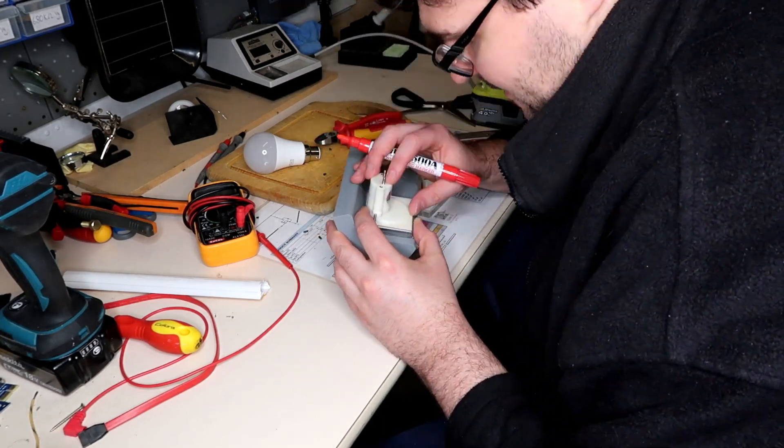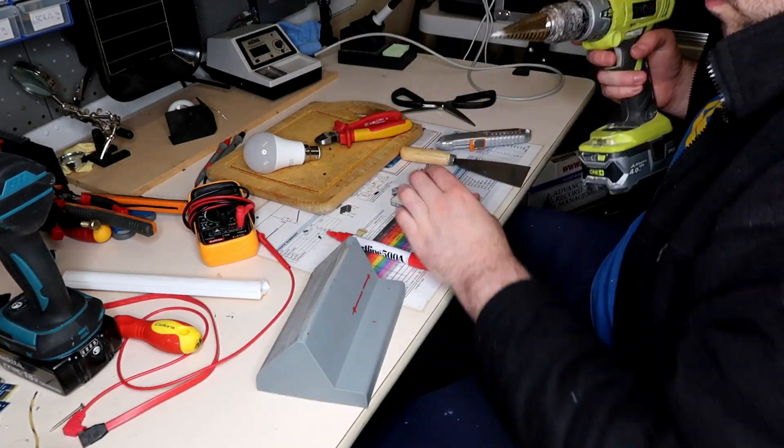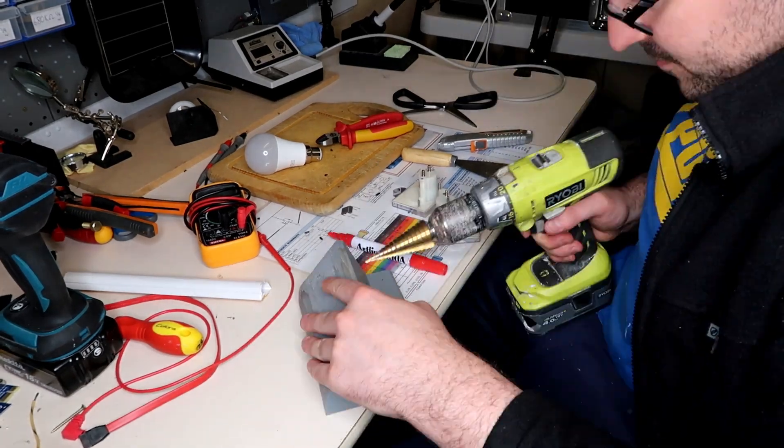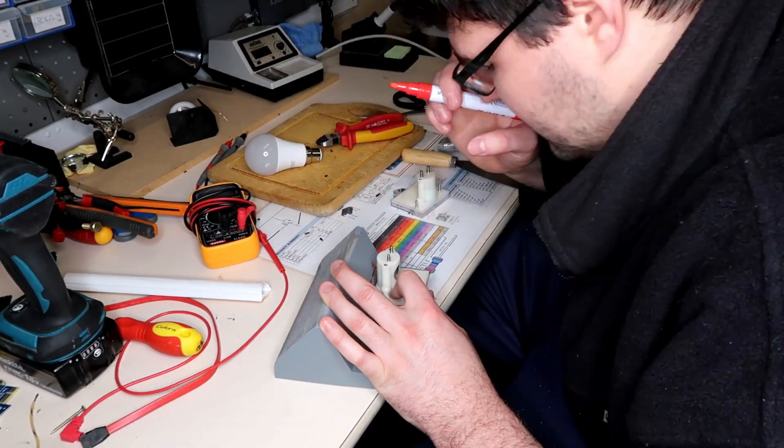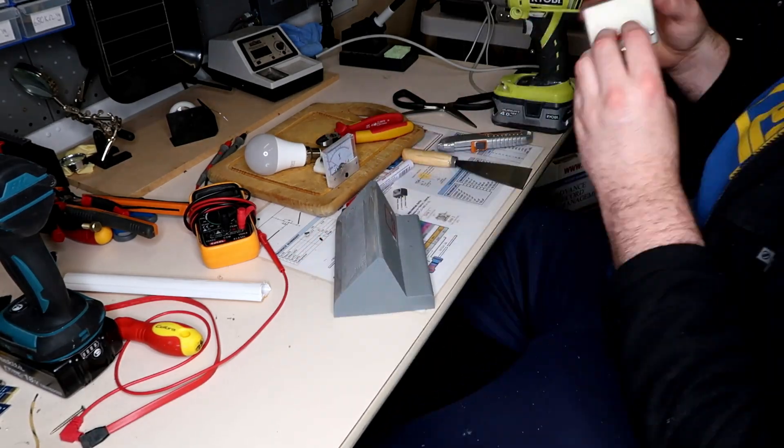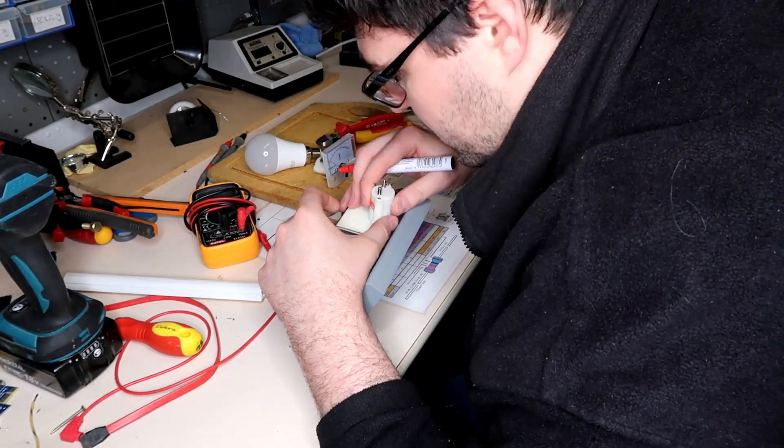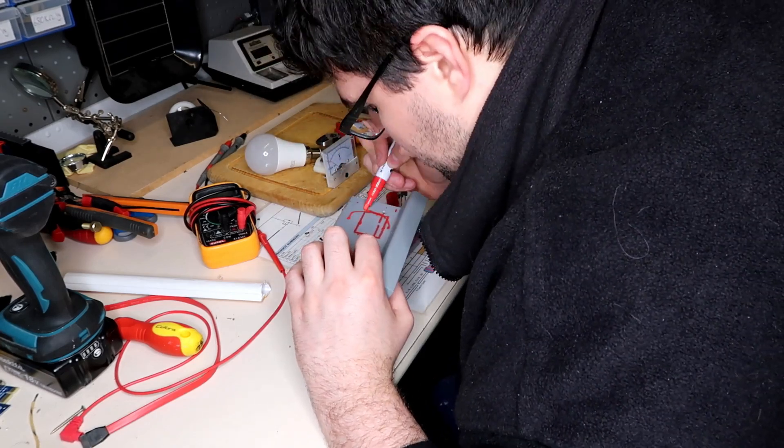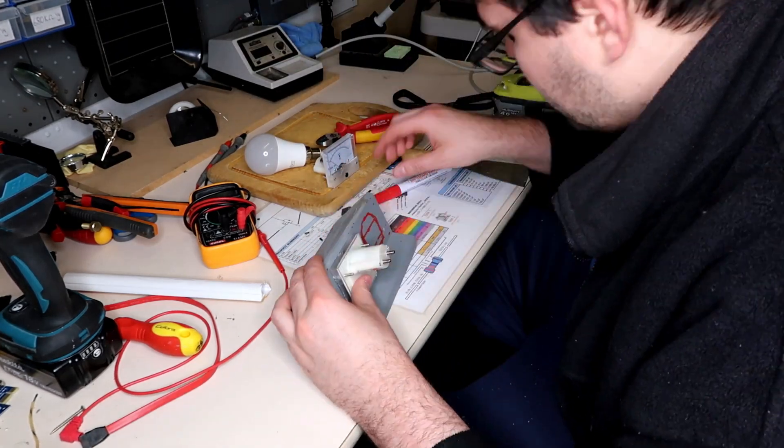And then once I've drilled everything out, I'm going to spray it all down with primer and then I'm going to spray it with a black paint. Now I'm not too fussed on how this looks, and at the end of the day if I ever stuff anything up I can reprint the entire model again.